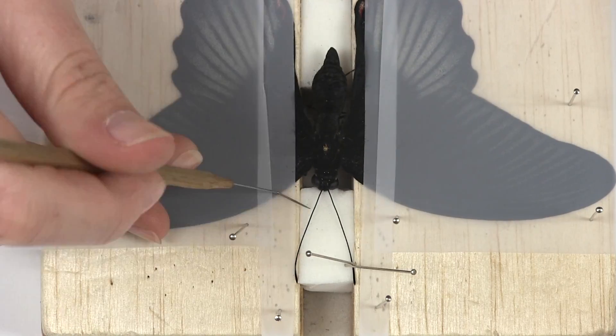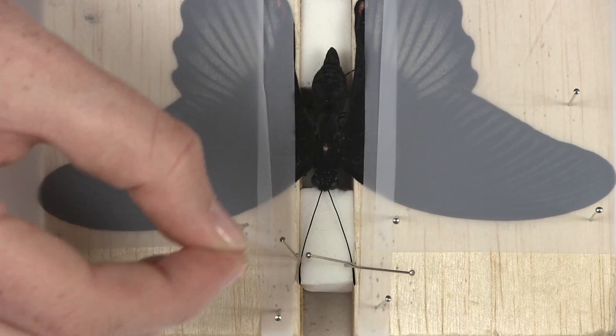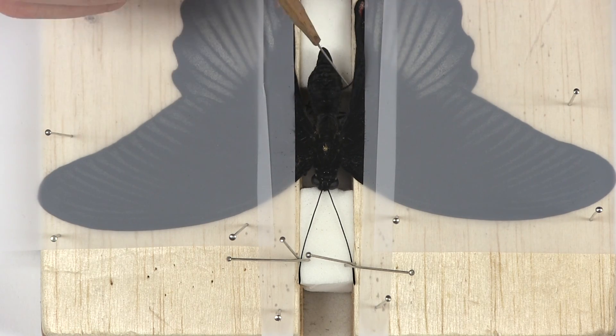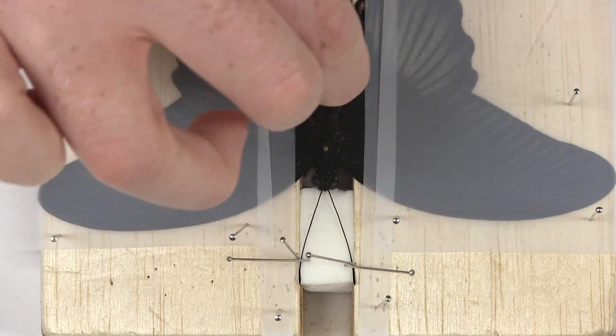Use straight pins to set the antennae and readjust the head. Tuck the legs in and secure the abdomen in its final position. Leave for two weeks until it is dry.